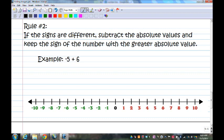That's a mouthful. All right, so I have a negative five and a positive six. The signs are different, so I'm going to ignore the signs for now. I have a six and a five. What's the difference of six and five? Well, six minus five is one.